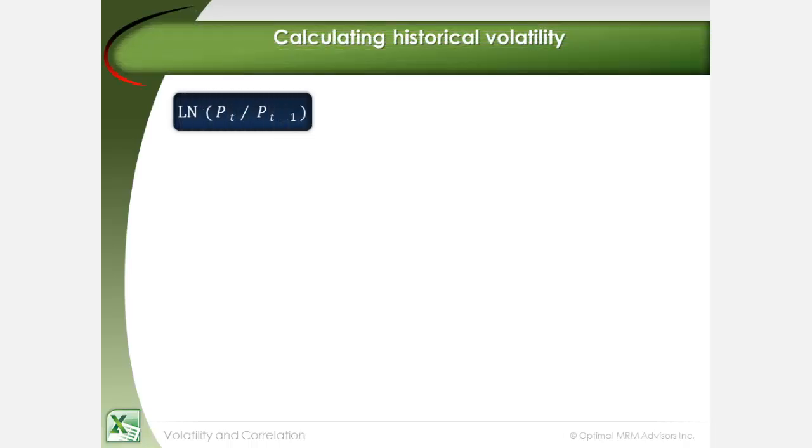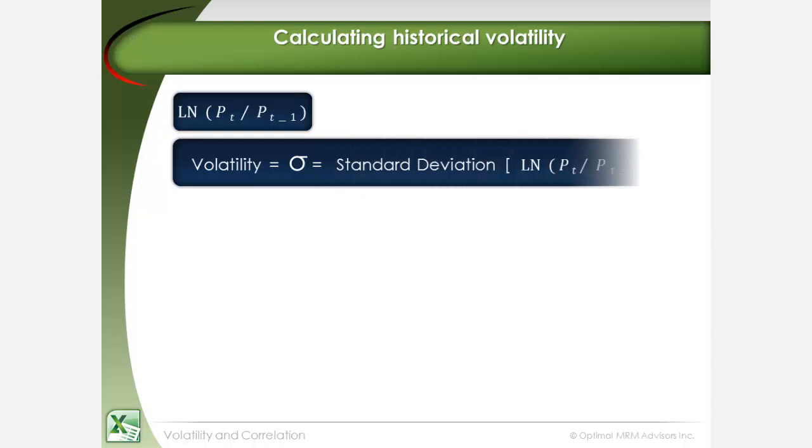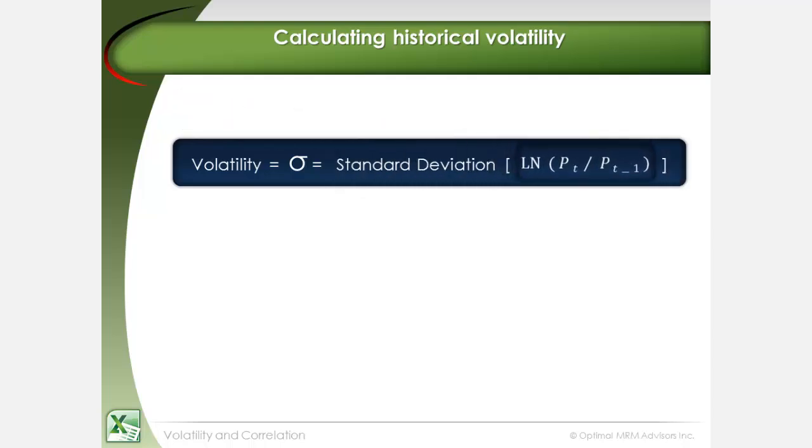We can express the relative changes, the natural logarithm of yield or price changes, for any given risk factor in statistical terms. The standard deviation function provides a convenient and practical way to calculate volatility. Volatility or sigma is equal to the standard deviation of the natural logarithm of price or yield relatives.